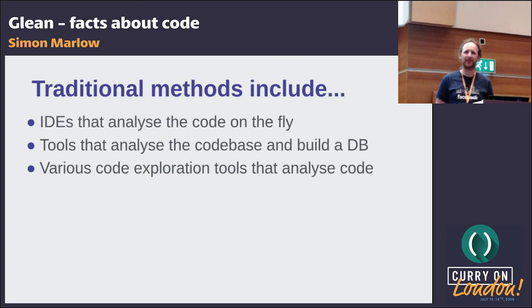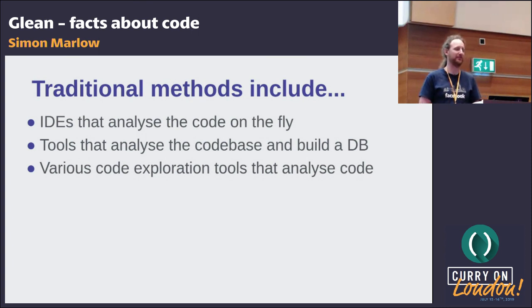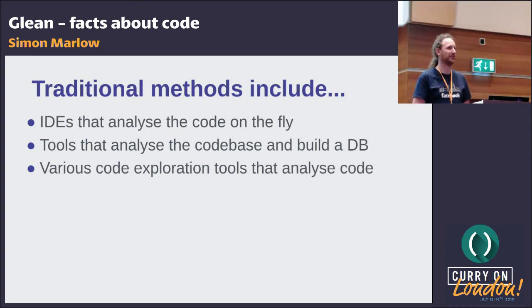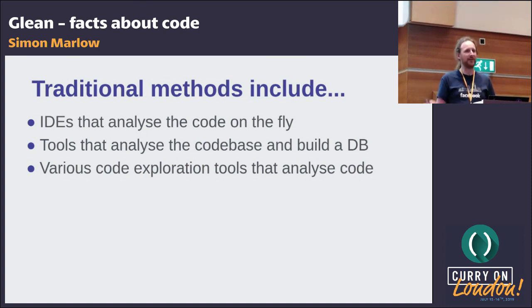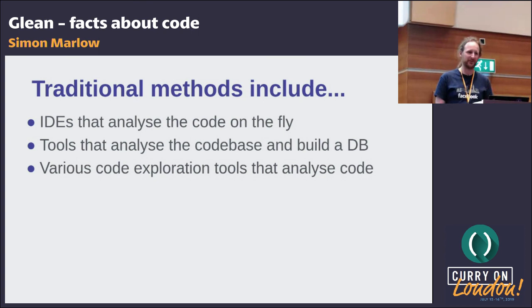The traditional methods for having metadata about your code include IDEs like Xcode, IntelliJ, or Eclipse that analyze code and build up metadata locally. There are also tools that analyze the code base and store data — things like our tool for Haskell that builds a database to support searching. There are good code exploration tools too, like the Chromium one, which provides a really nice navigation experience. But none of these things are particularly integrated, and IDEs in particular work locally on your machine.